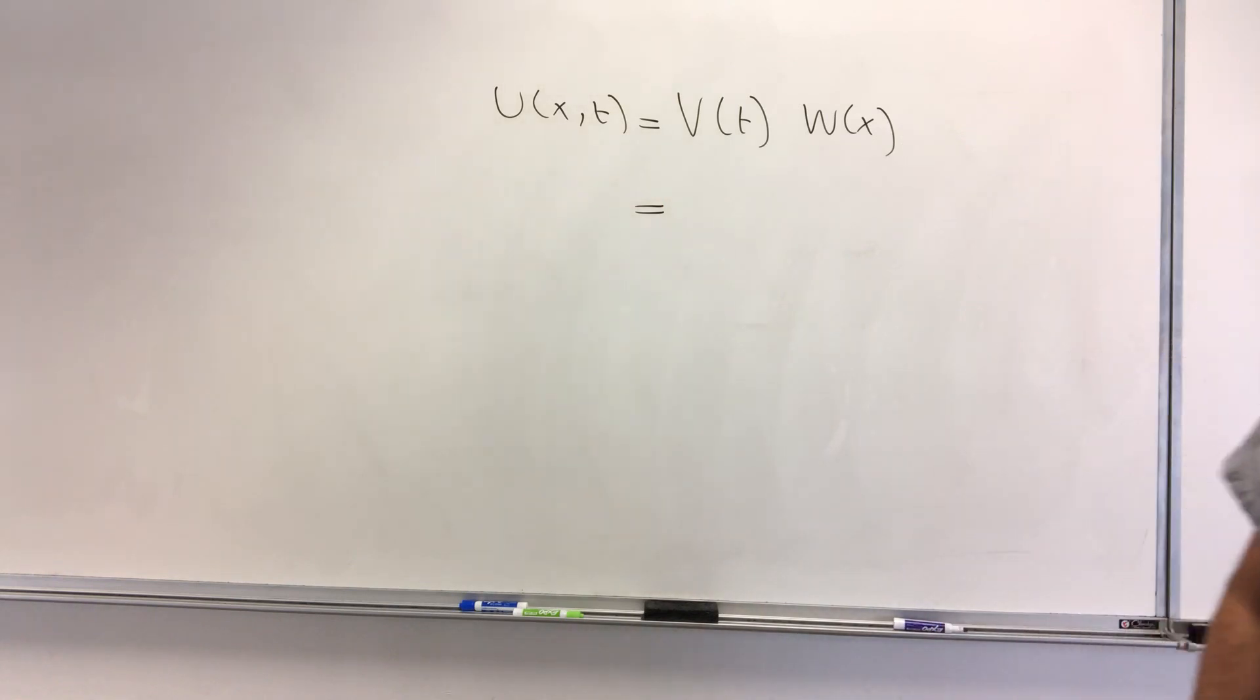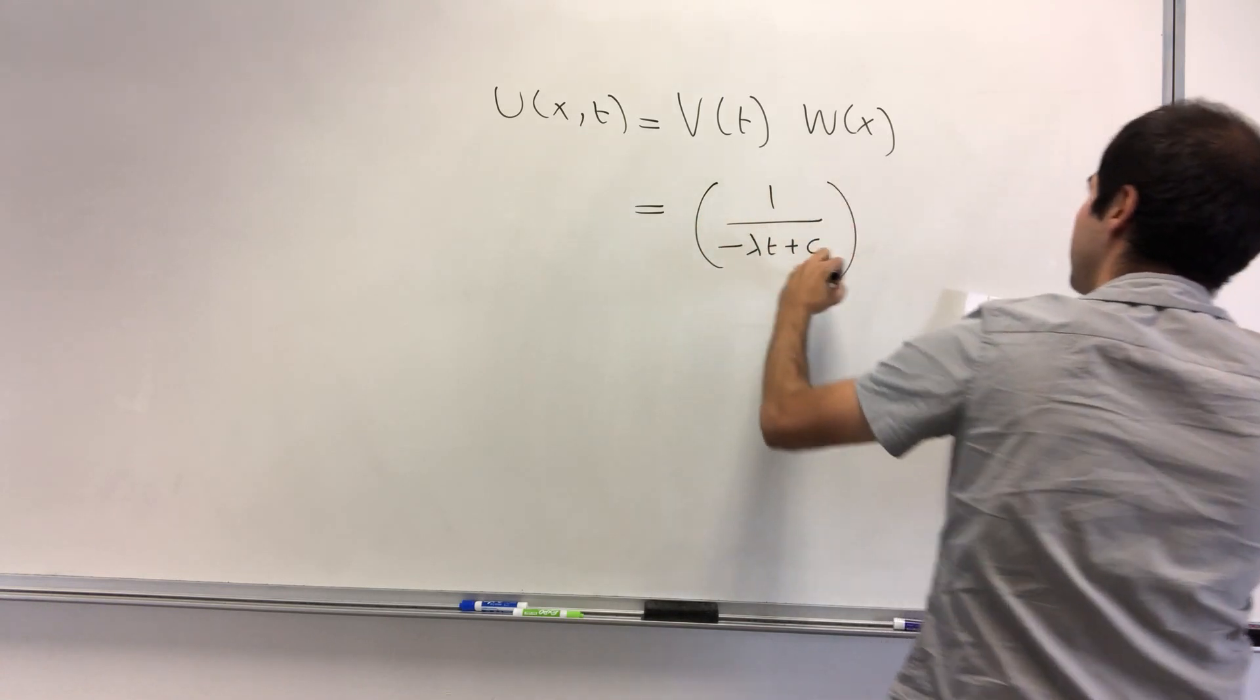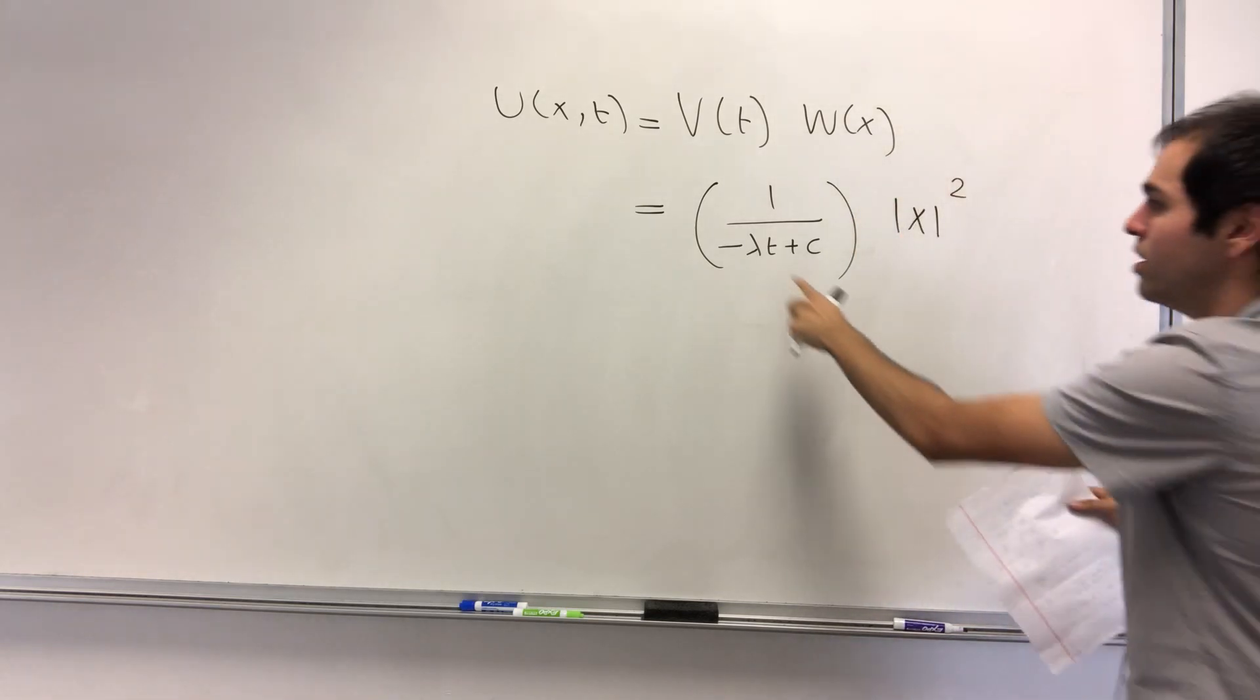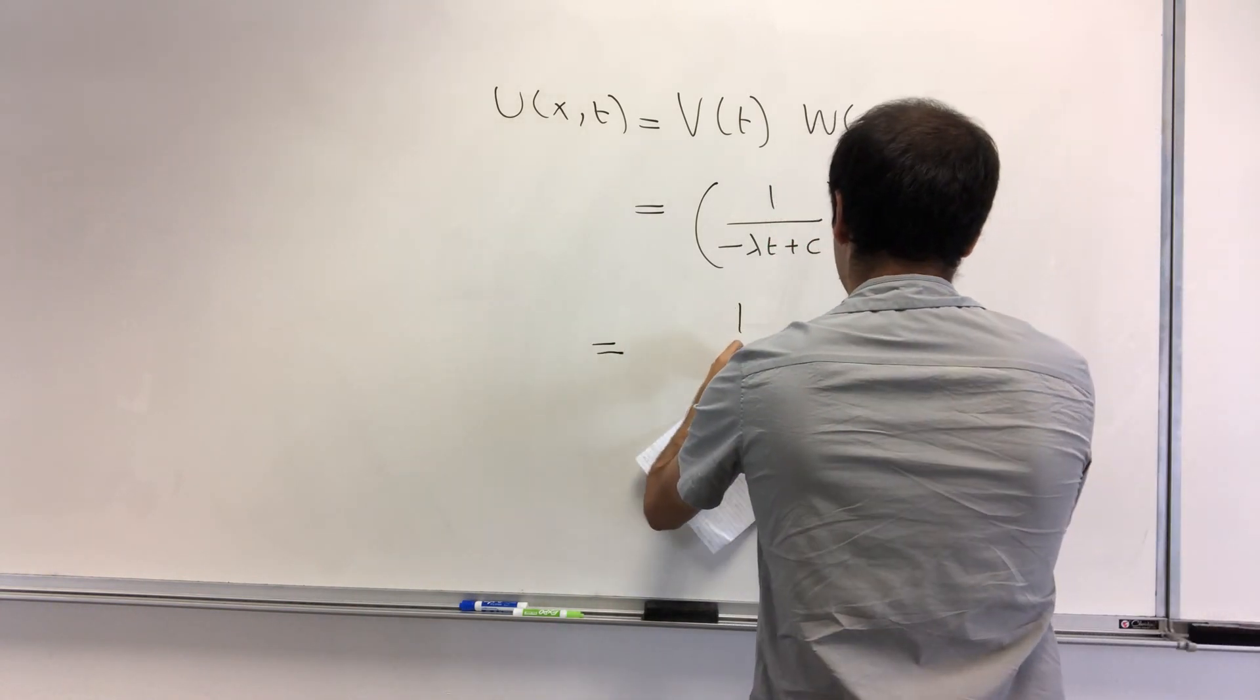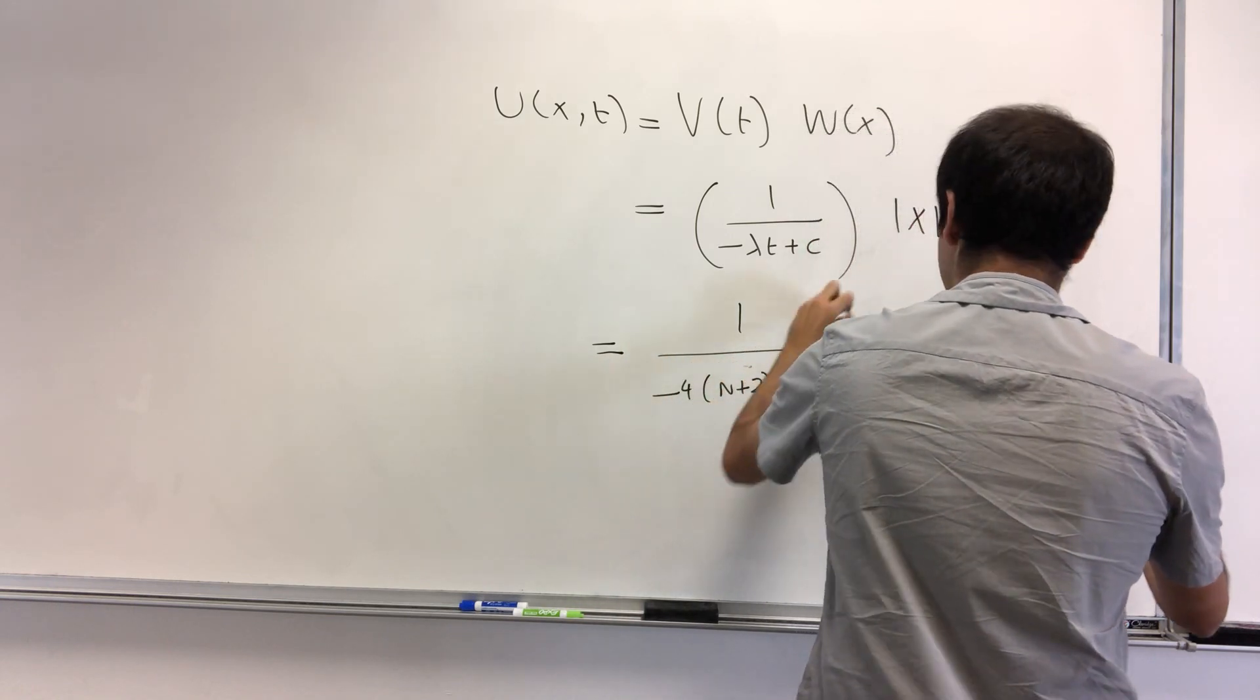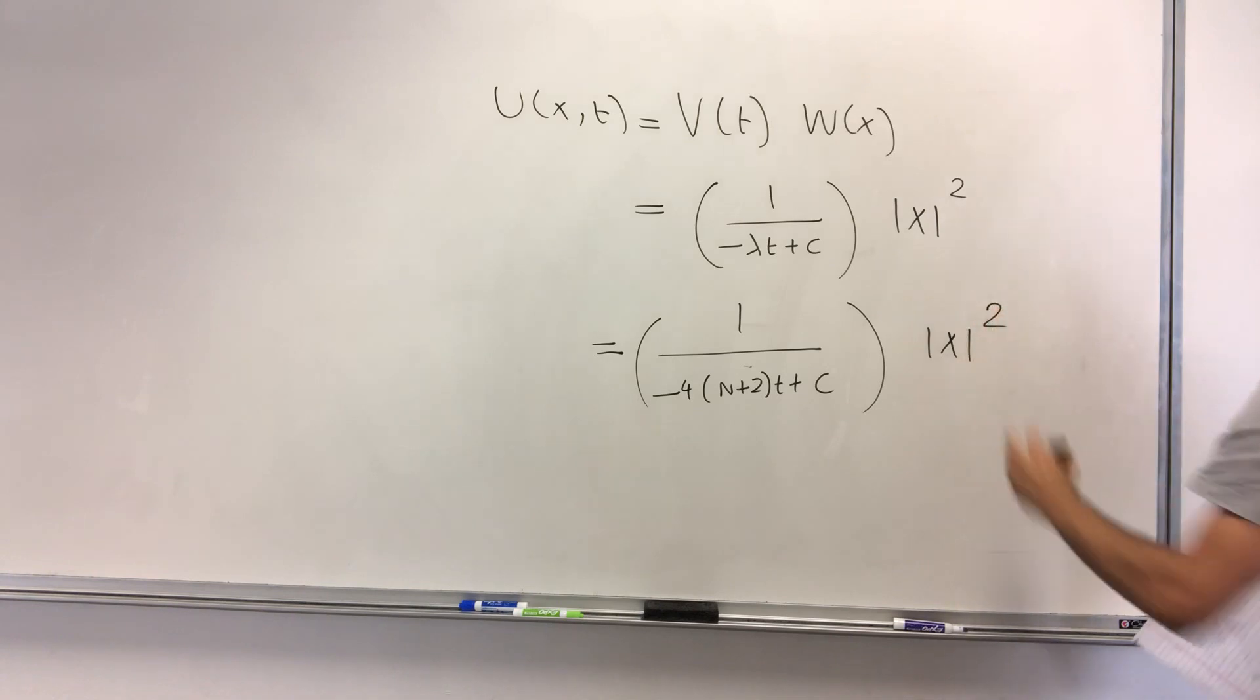v, we found this to be that reciprocal function, so 1 over minus lambda t plus c. w, we found this to be the squaring function. So x to the alpha with alpha is 2, and remember we found lambda, so lambda was just 1 over minus 4 times n plus 2t plus c times x squared.